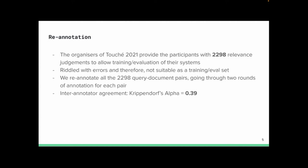Before going further, I want to talk about re-annotation. We were given 2298 relevance judgments, or question-answer pairs, for training and evaluation of our systems. These were full of errors and definitely not suitable for either training or evaluation — likely a result of crowdsourcing. We re-annotated all of these relevance judgments, going through two rounds of annotation for each pair, and achieved a Krippendorff's alpha of 0.39. Not very high, which again signals an issue with the annotation process itself.